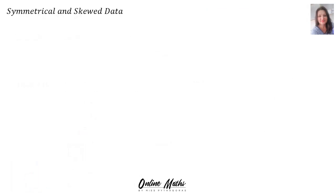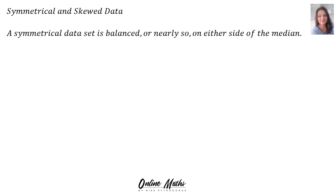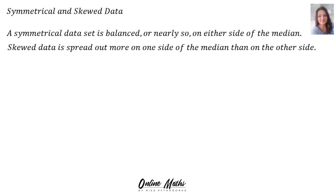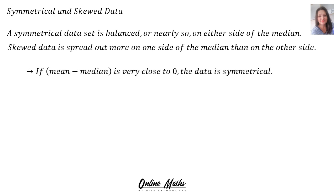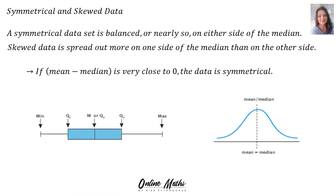Now let's look at symmetrical and skewed data. A symmetrical data set is balanced, or nearly so, on either side of the median. Skewed data is spread out more on one side of the median than the other. If the mean minus the median is very close to 0 or equal to 0, the data is symmetrical. On a box and whiskers diagram and bell curve, you can see that the mean equals the median for symmetrical data.